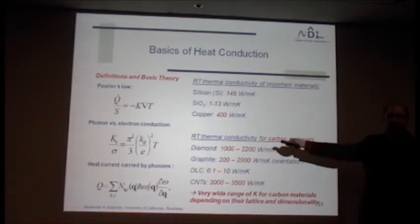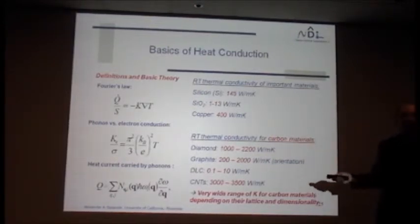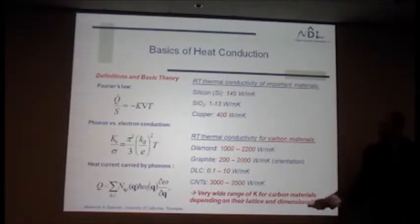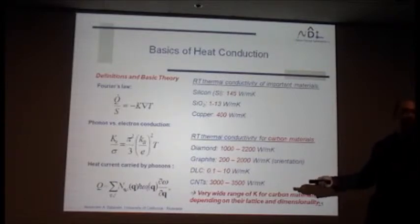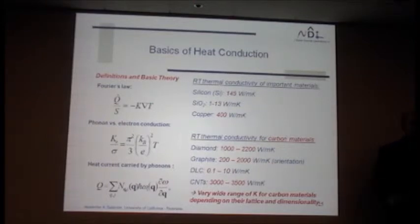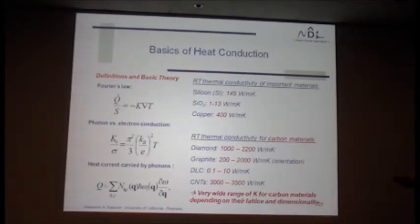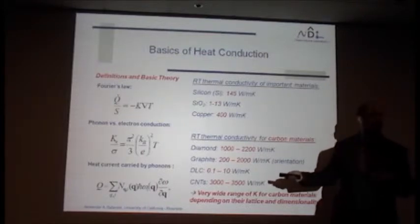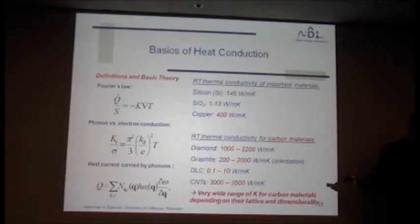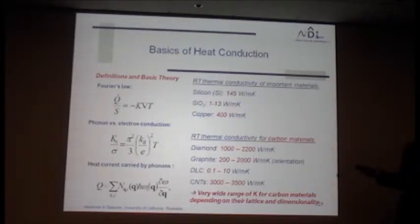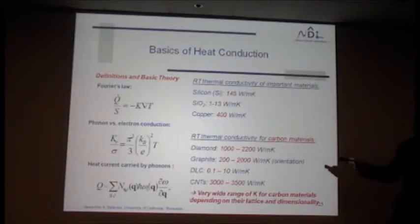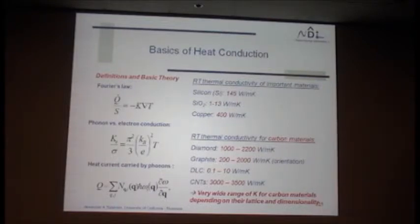Thermal conductivity is the coefficient in the Fourier law. Heat in materials can be conducted by two entities: it can be conducted by electrons — if it's a metal, that's the case — and it can also be conducted by lattice vibrations, or phonons. The electronic part of thermal conductivity is relatively straightforward to figure out from the Wiedemann–Franz law; if you know the electrical conductivity, you can figure out the electronic contribution. The phonon part is more difficult. Thermal conductivity of silicon is around 150 W/m·K near room temperature. Silicon oxide is about 10 to 100 times less. Copper bulk value is about 400 W/m·K, but if you go to a copper interconnect it will drop if you have a very tiny wire.